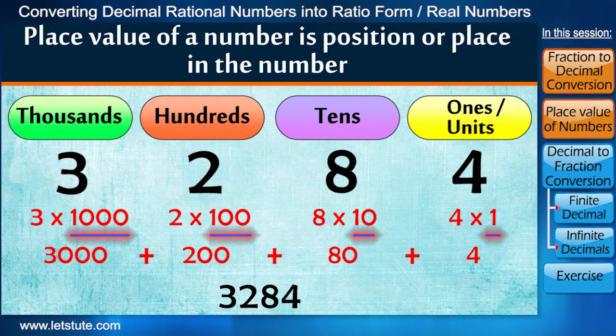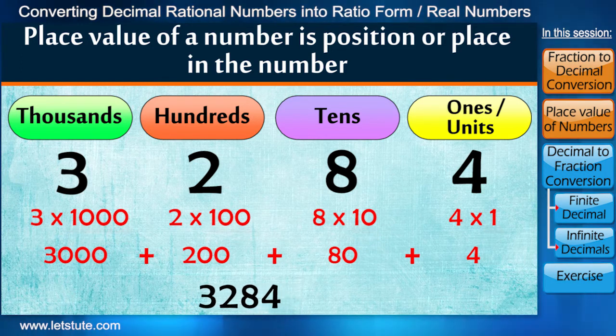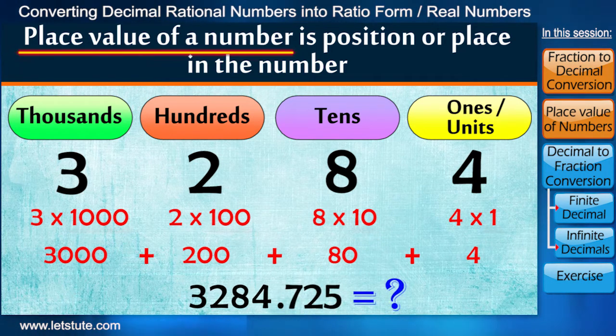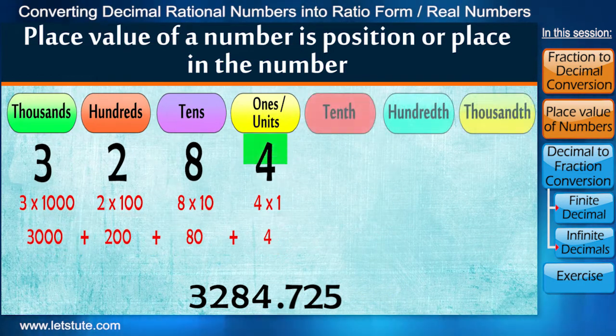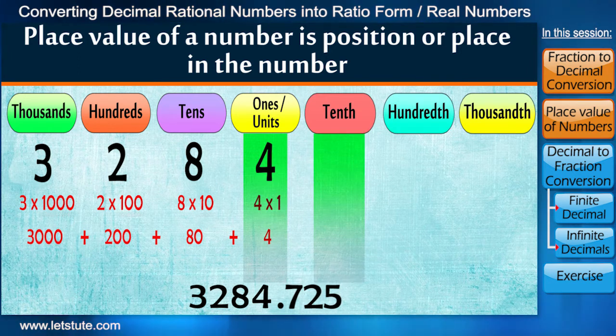But do decimal numbers also have place value? Yes, same will happen in this case too. If the place value of number 4 is ten times bigger than the column to its right, then the digit 7 should have position 1 upon 10.